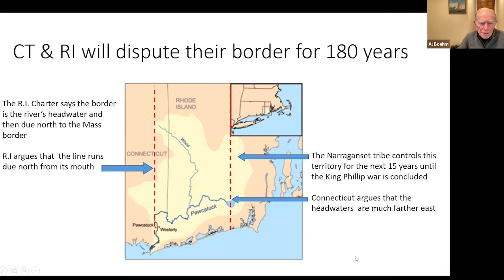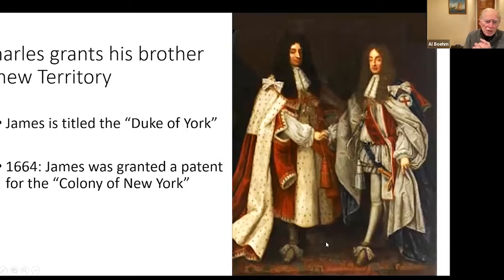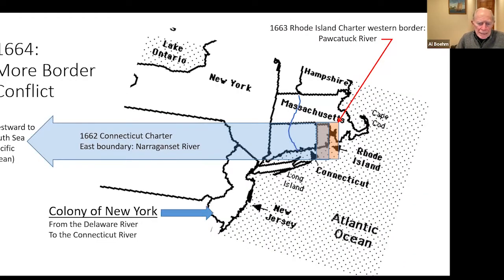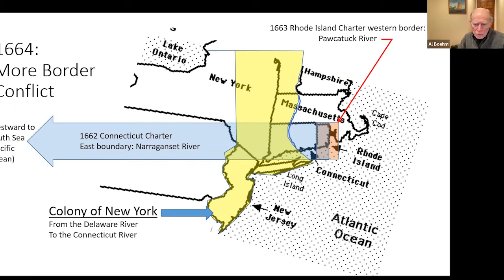The next year, Charles grants his brother James — who had returned from exile in Europe — the title of the Duke of York, along with a patent for the colony of New York. It started at the Delaware River at the bottom of New Jersey and spread all the way to the Connecticut River and into the headwaters of the Connecticut River. That creates a serious problem for Connecticut.